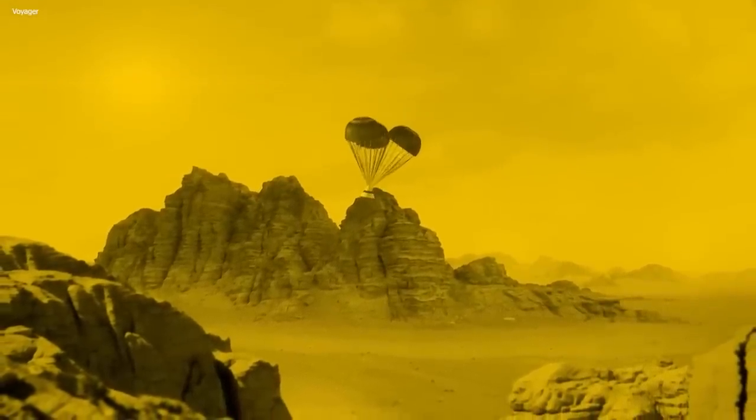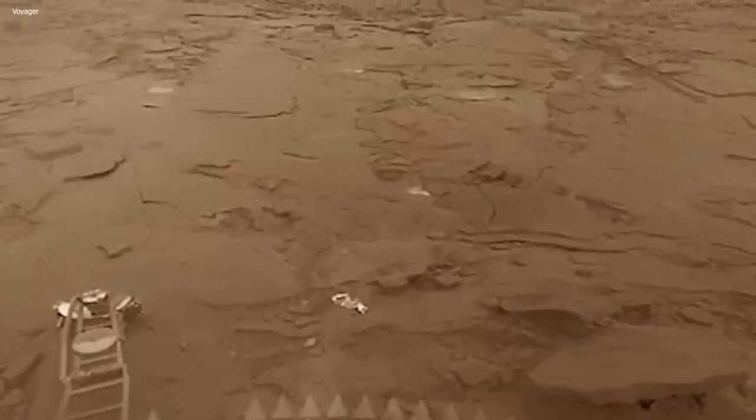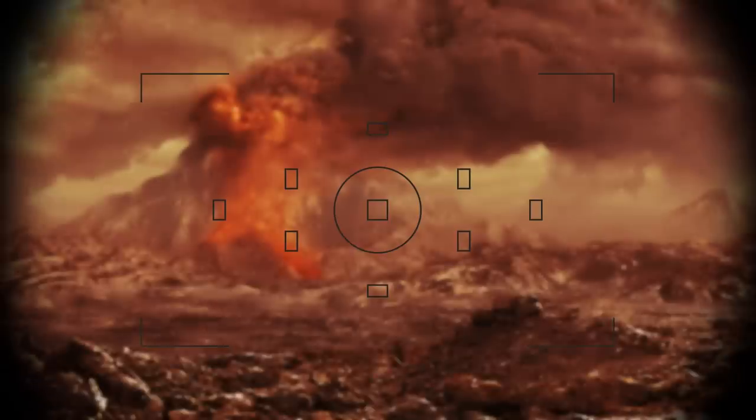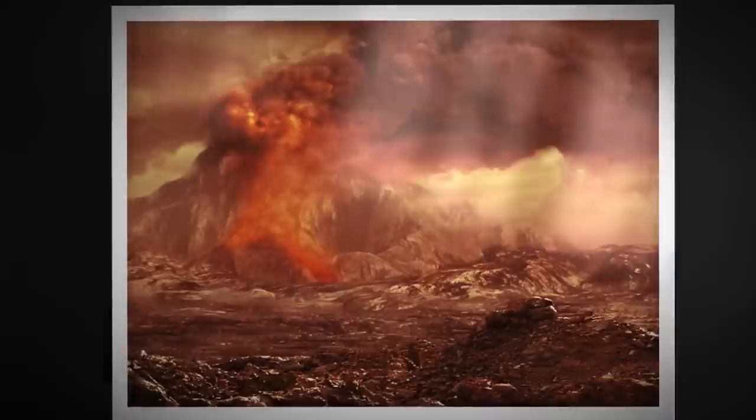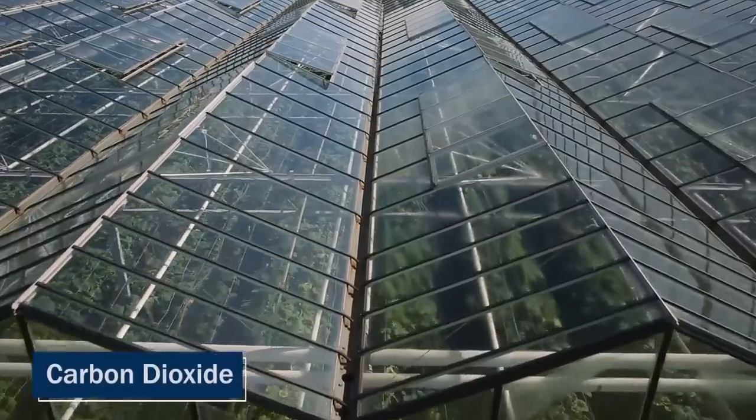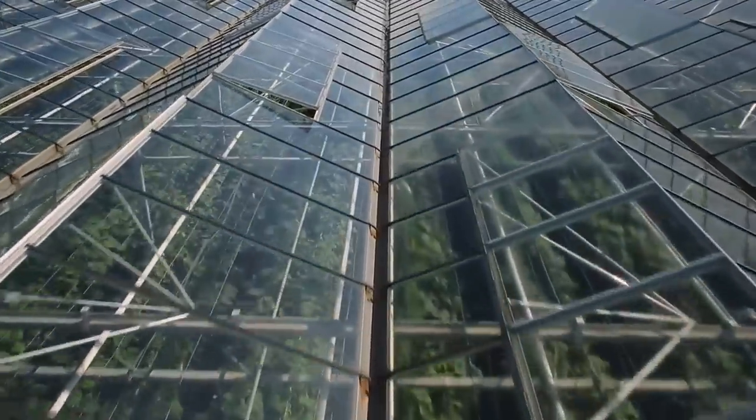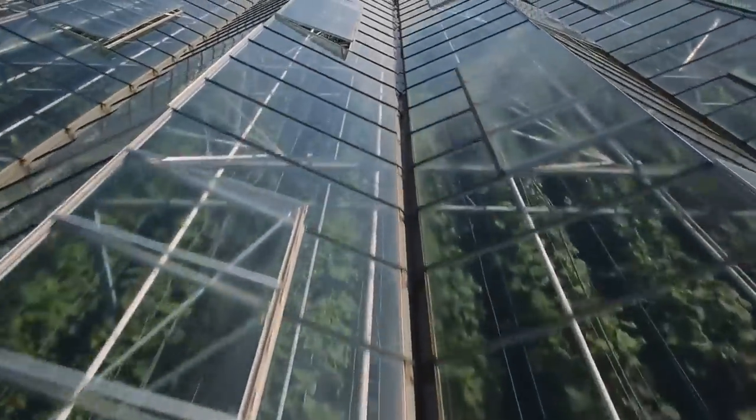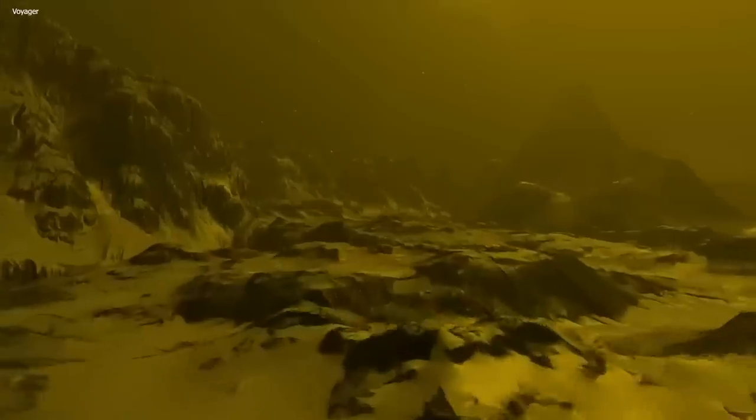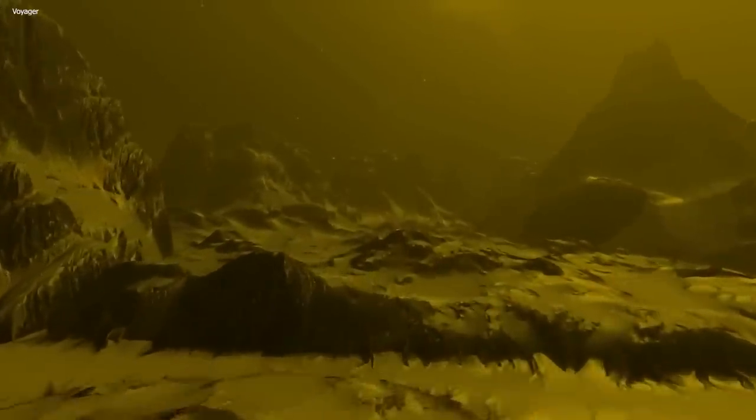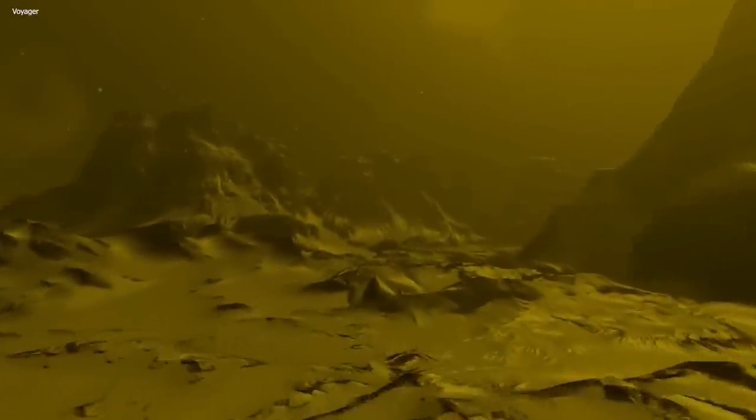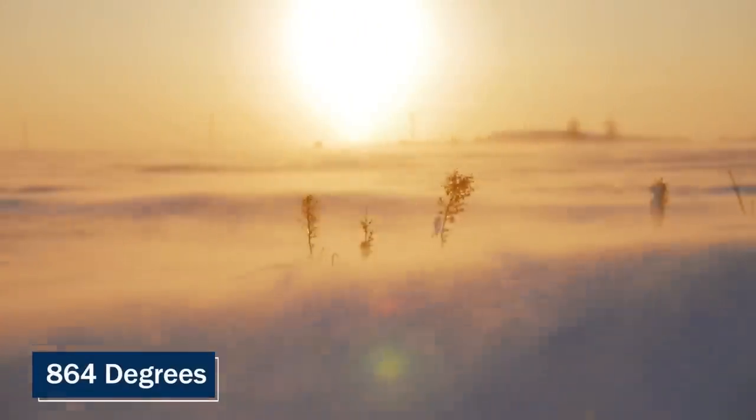Venera 4 was one of those probes. It not only made it to the surface, in fact, but it also discovered very high quantities of carbon dioxide in the atmosphere. This was a significant finding because it helped us understand more about the planet's geology and climate. Carbon dioxide is a greenhouse gas, meaning it traps heat in the atmosphere, leading to a warming effect. The high levels of carbon dioxide on Venus contribute to the planet's extremely high surface temperatures, which can reach up to 864 degrees Fahrenheit.